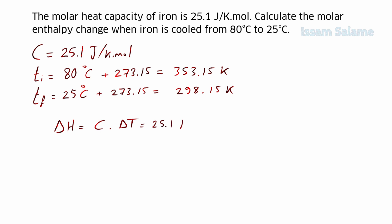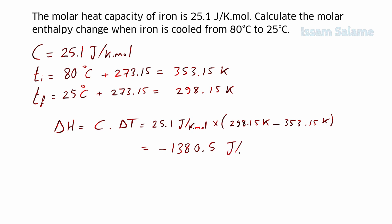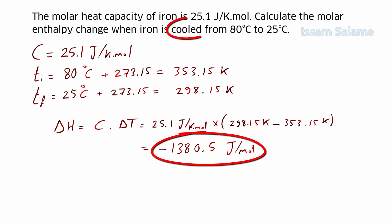c is the molar heat capacity, which is 25.1, and ΔT is the final temperature (298.15) minus the initial temperature (353.15). Since the final temperature is less than the initial temperature, ΔT will be negative, and the answer is −1380.5 joules per mole. The answer is negative because we are cooling — during cooling, the molar enthalpy change is negative.